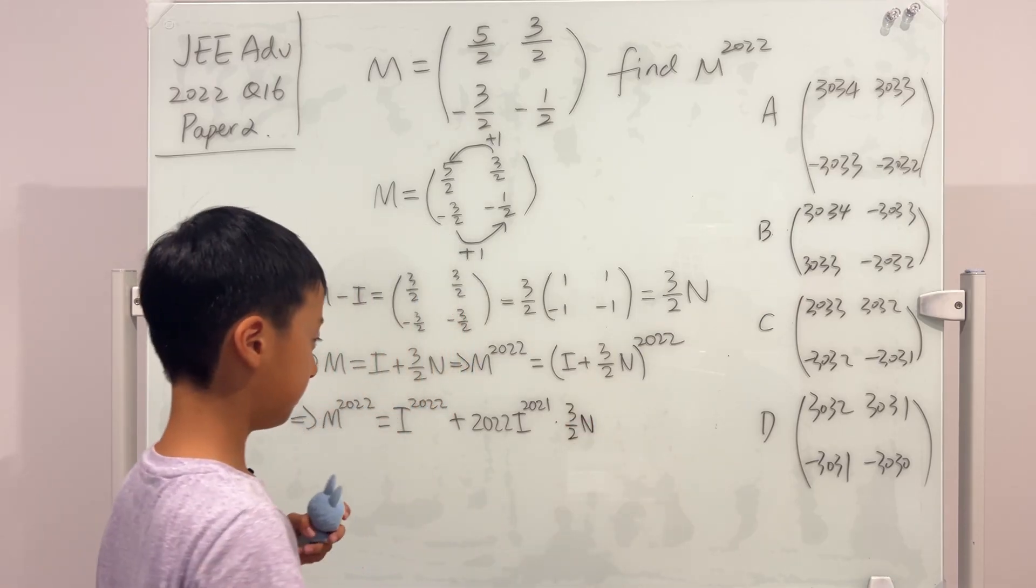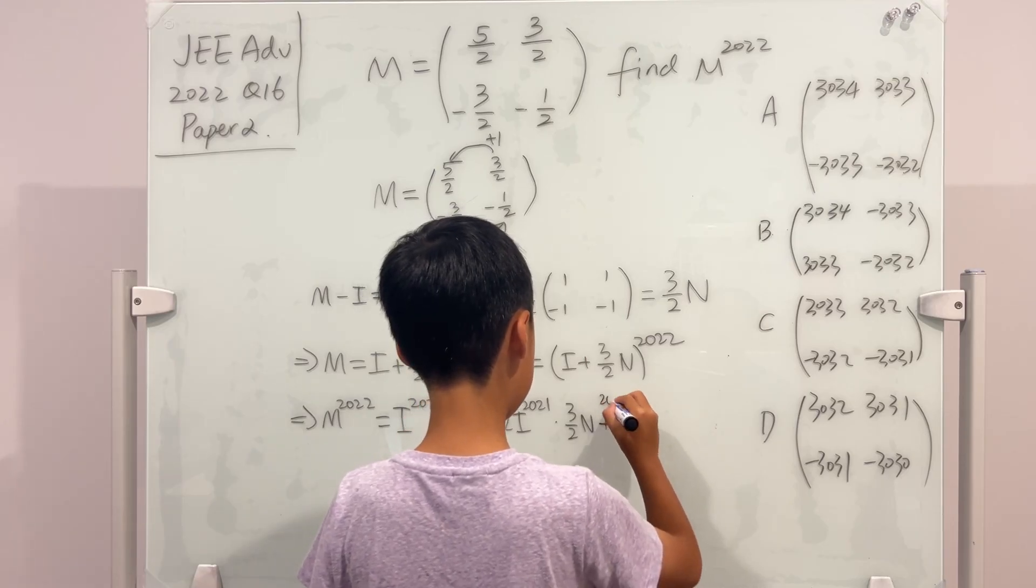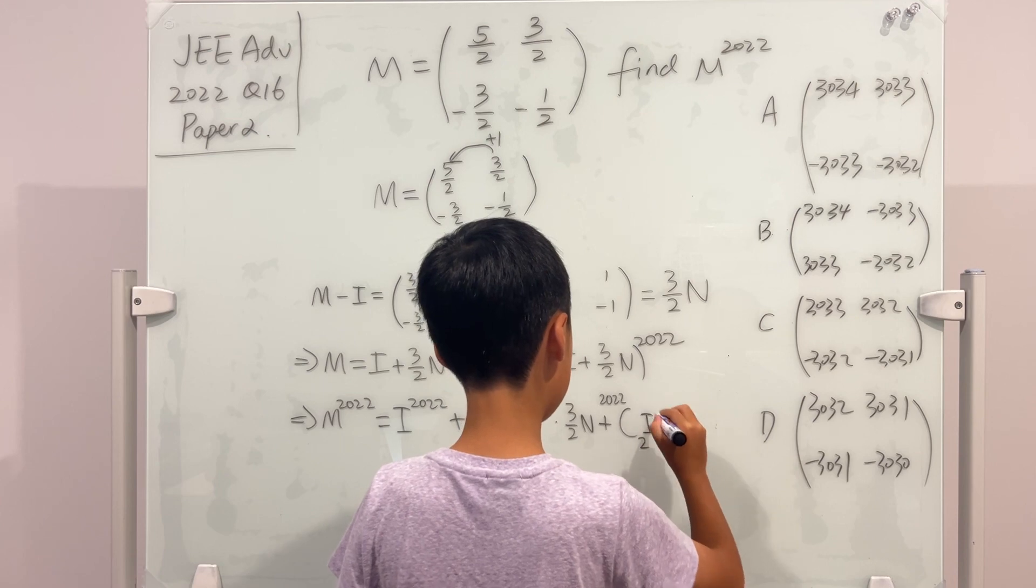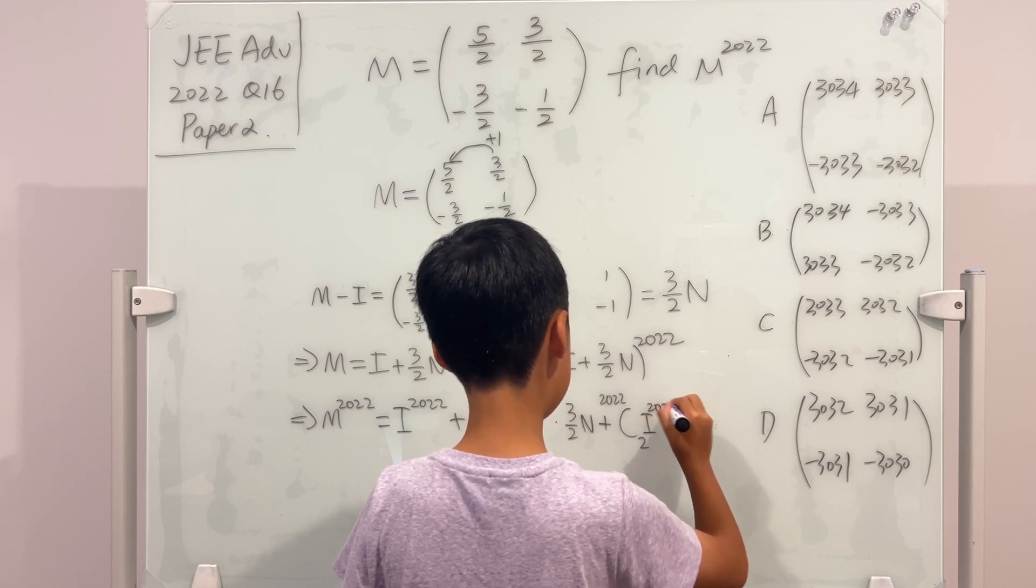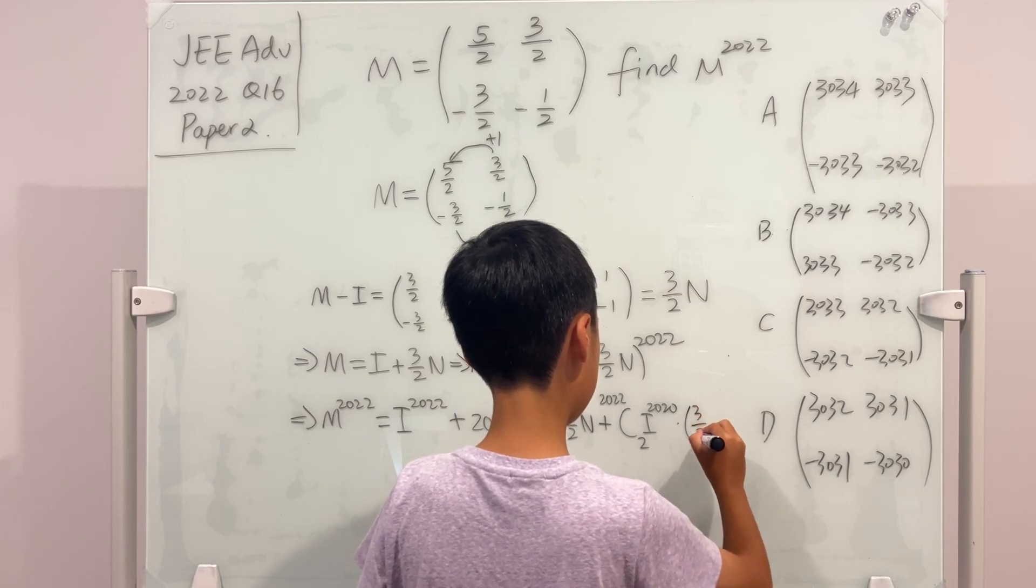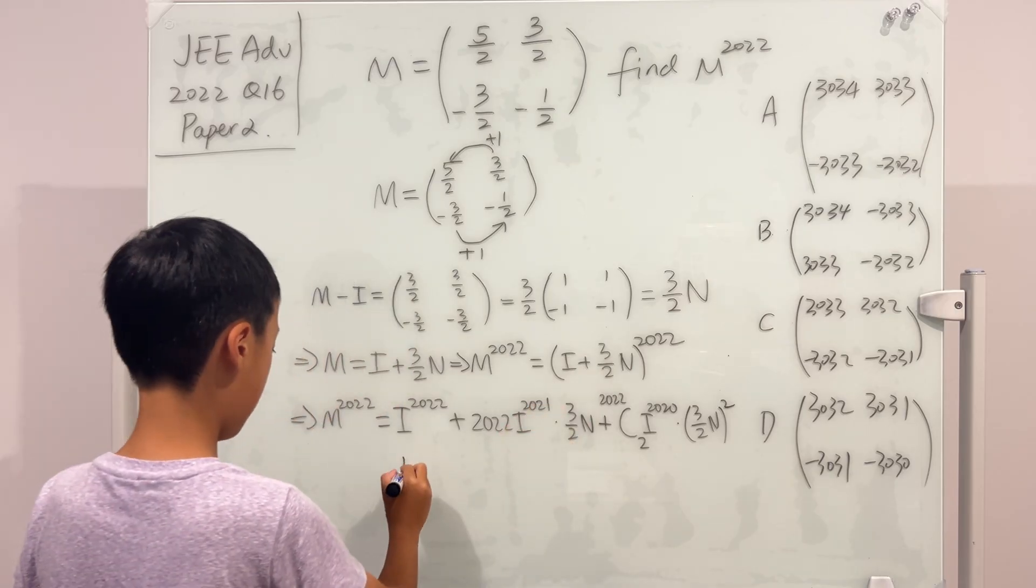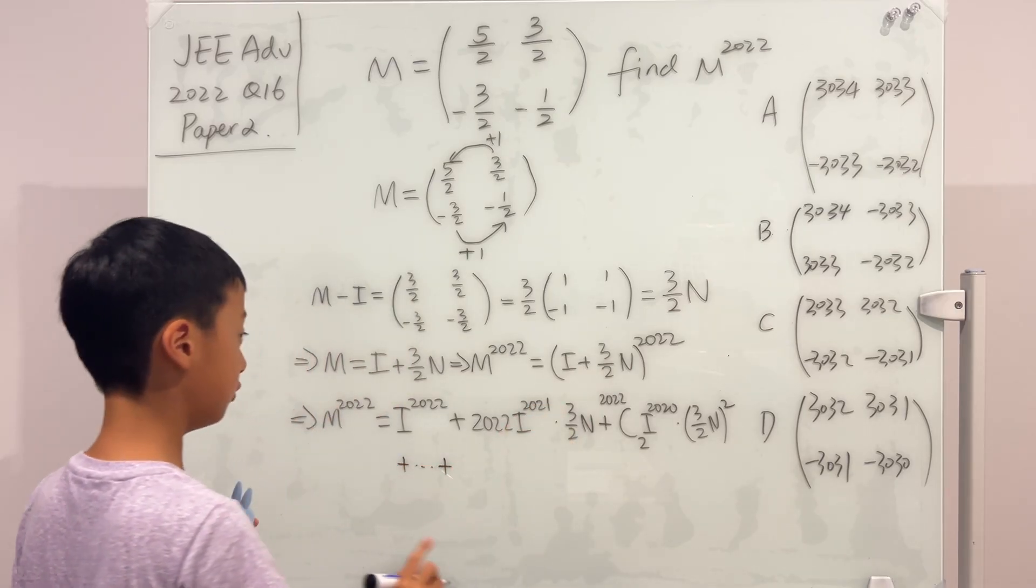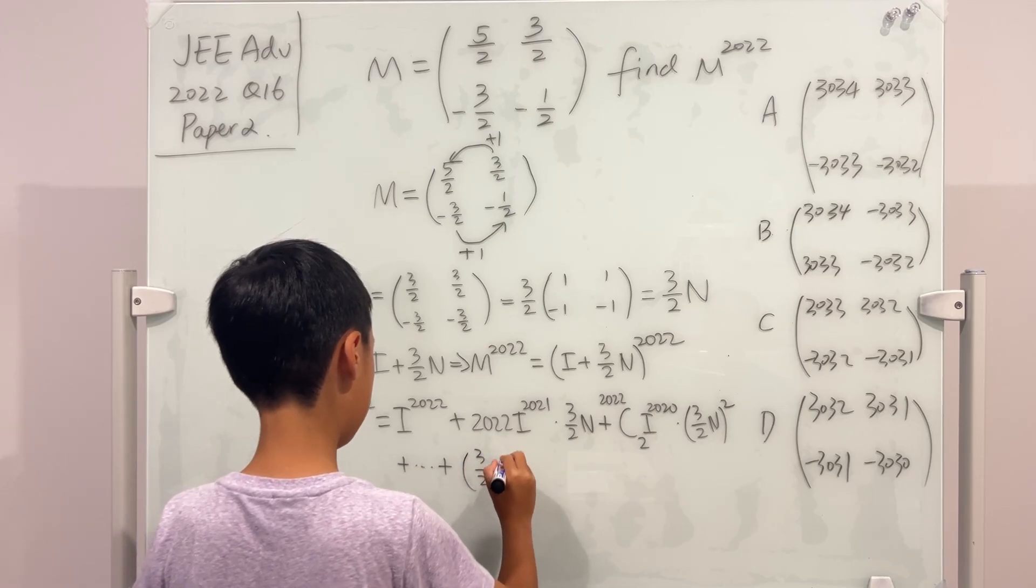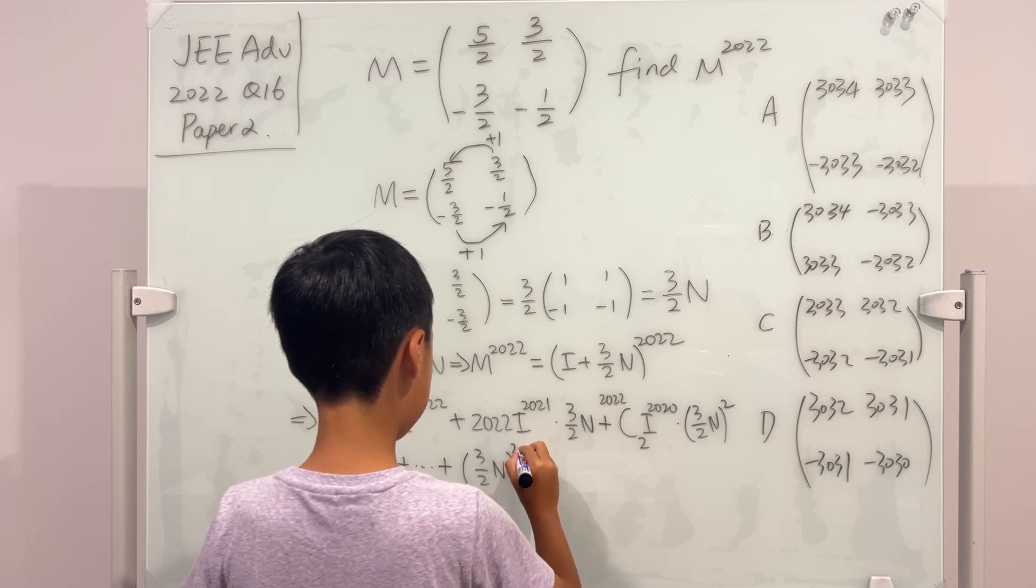Next, we add C 2022 choose 2, and then I to the power 2020, and then multiply by 3 over 2N squared. And then we add all the way to the last term, which is 3 over 2N raised to the power of 2022.